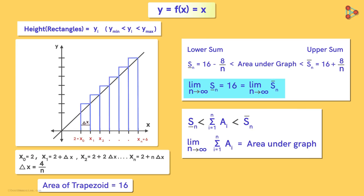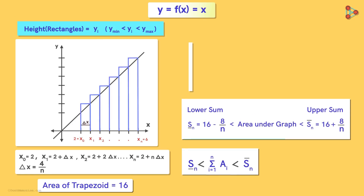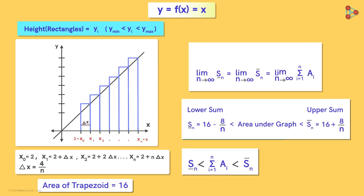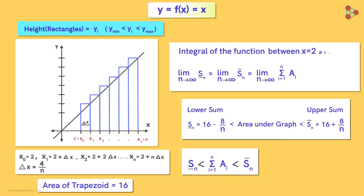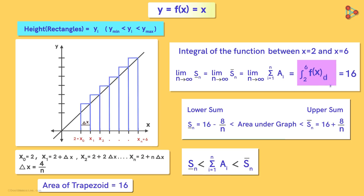This tells us that whatever y value we take as the height of the rectangles, the limit of the sum of areas of rectangles will approach the area under the graph. This limit of the sum of areas of the rectangles is called the integral of the function. In this case, the integral of the function between x equal to 2 and 6 is 16, denoted like this.